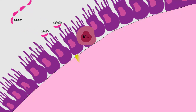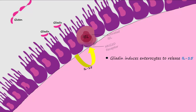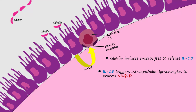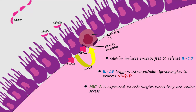Gliadin also induces enterocytes of the small intestine to release IL-15, an interleukin that triggers proliferation and activation of intraepithelial lymphocytes, abbreviated as IEL. When these CD8-positive lymphocytes become activated, they begin to express NKG2D receptors. The ligand for NKG2D is MICA, expressed on the surface of enterocytes. MICA is expressed by enterocytes under conditions of stress, such as during bacterial infections or with cancer.